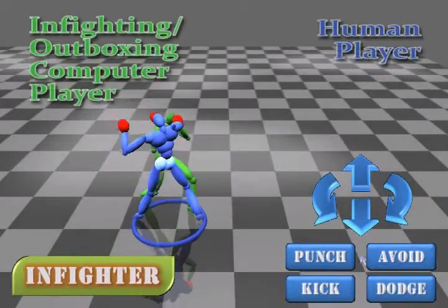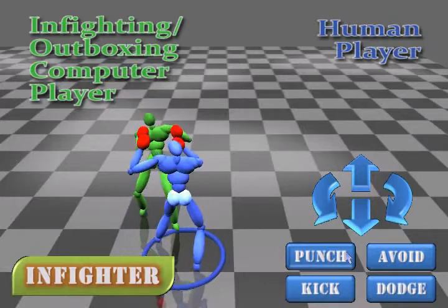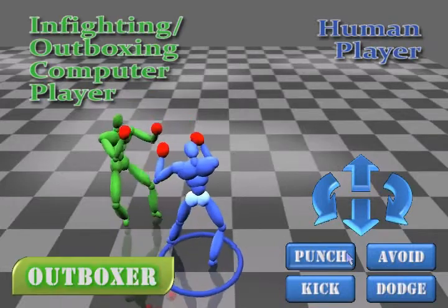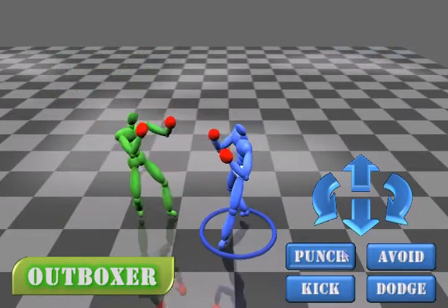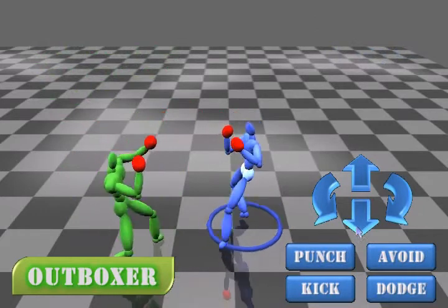We simulate an infighting style by shortening the preferred distance and giving higher scores to short-range attacks. Similarly, we simulate an outboxing style by increasing the preferred distance and giving higher scores to long-range attacks.